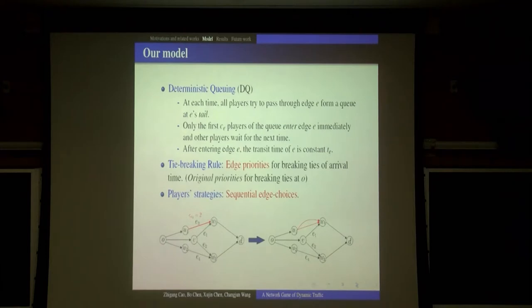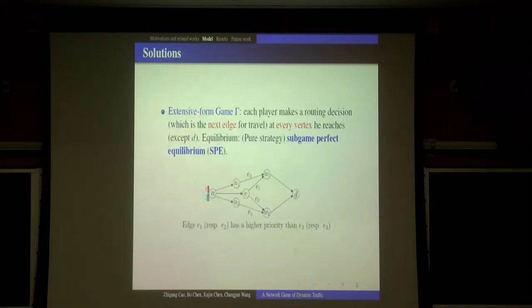The second critical difference is that we allow players to make flexible decisions. They choose edges. This is to say when a player arrives at a vertex, he then decides which is the next edge he will try to use, based on the current system state and all the player's previous decisions. We denote this extensive form game as game Gamma and we consider the equilibrium concept sub-game perfect equilibrium.